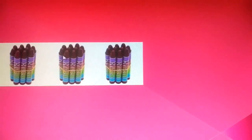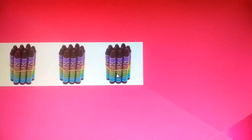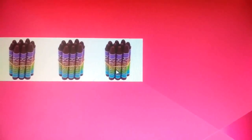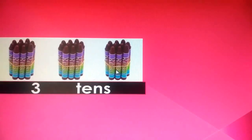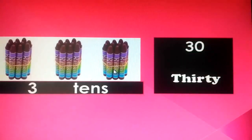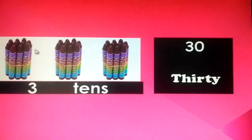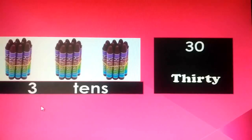So here we are having 3 tens — that means 3 bundles of 10 things. 3 tens means 30. Why? 10, 20, 30. So 1 ten, 2 tens, 3 tens — 3 tens is equal to 30.